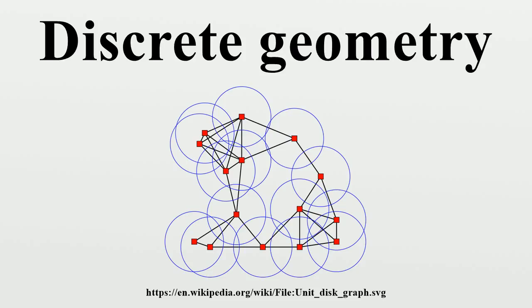A discrete group is a group G equipped with the discrete topology. With this topology, G becomes a topological group. A discrete subgroup of a topological group G is a subgroup H whose relative topology is the discrete one. For example, the integers Z form a discrete subgroup of the reals R, but the rational numbers Q do not.